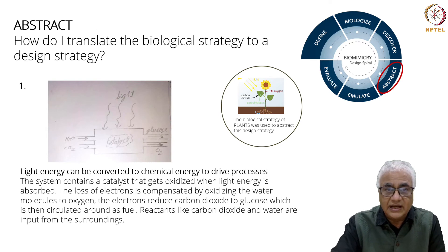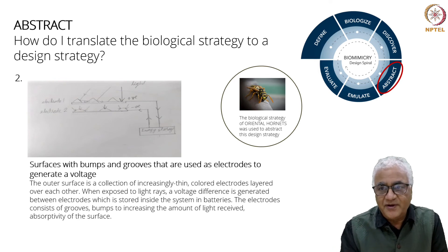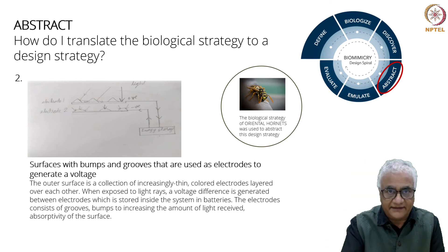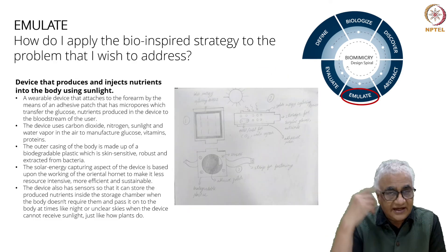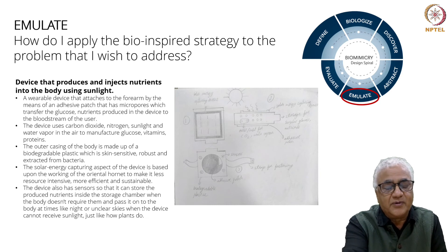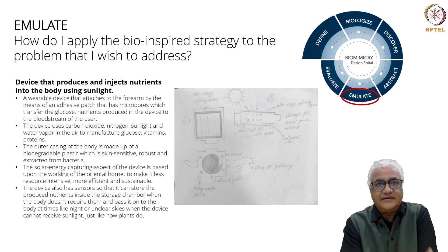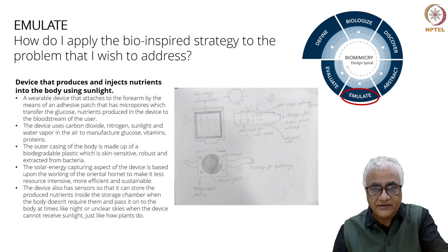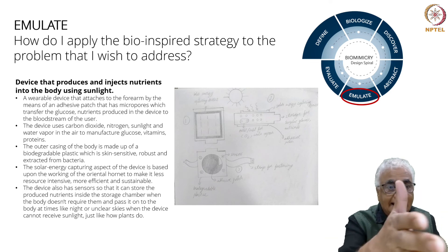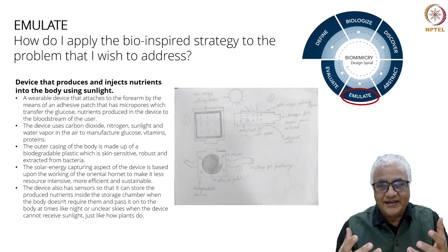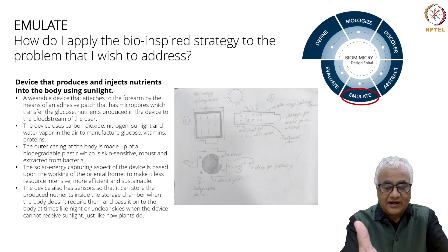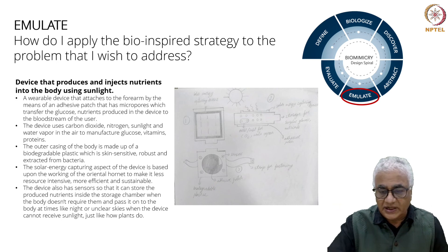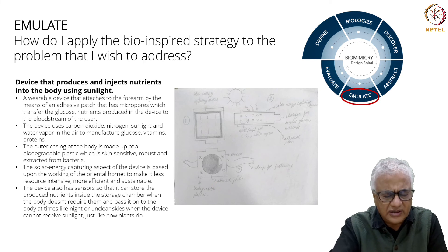He abstracts the principle — the biological strategy of those two organisms in simple language. And now this is the time from abstract to emulate, where the bulb starts to shine in his head. He could have thought about a thousand ideas, but he chooses this one: a device that produces and injects nutrients into the body using sunlight — a wearable device that produces and injects nutrients into the body using sunlight. Please pause at this moment and read it, because that will help encourage Ishan's work. He has worked so hard on the strategy, on the emulate, on the idea.